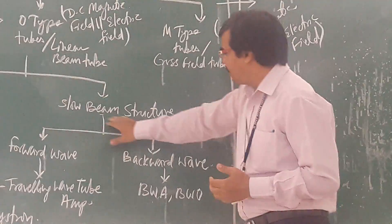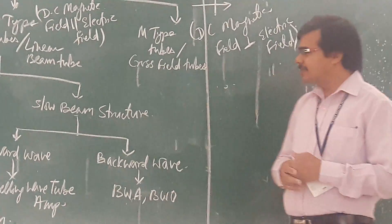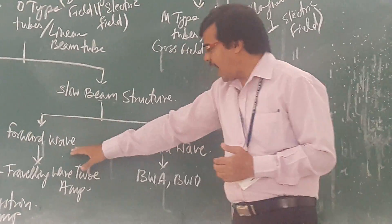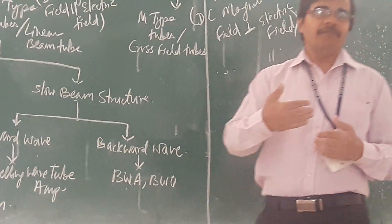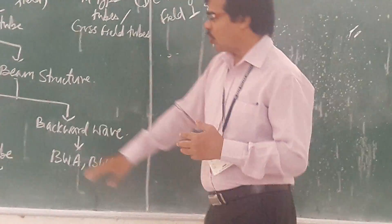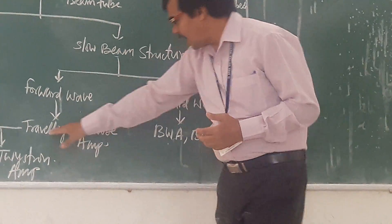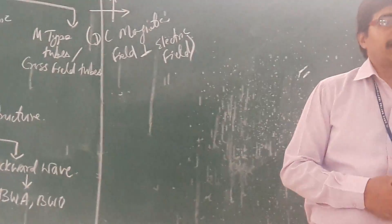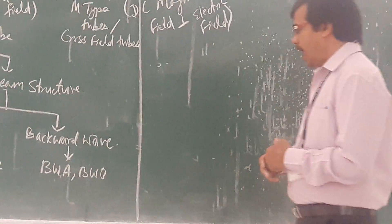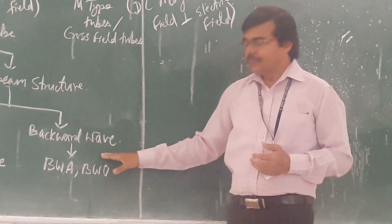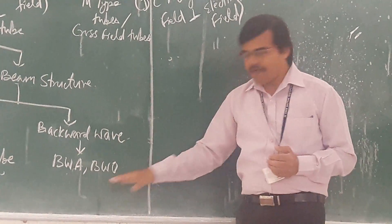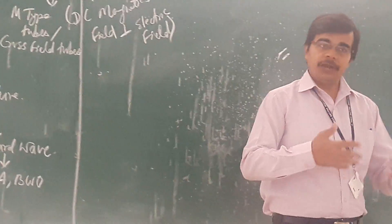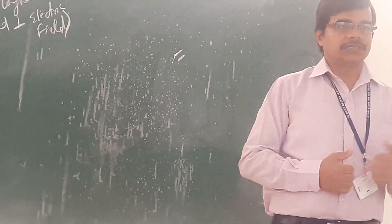When we are going for your slow beam structure, in slow beam structure, you are having a forward wave or you are having a backward wave. If you are going for the forward wave, there you are having traveling wave tube. Traveling wave tube is an amplifier. And when we are going for your backward wave, in backward wave, we are having backward wave amplifier and backward wave oscillator.